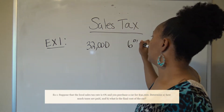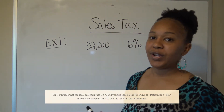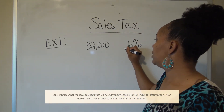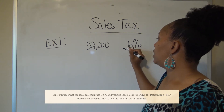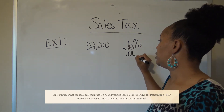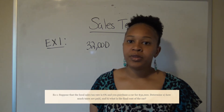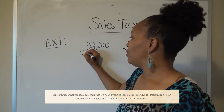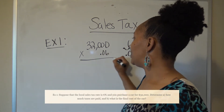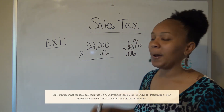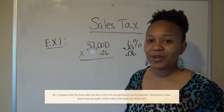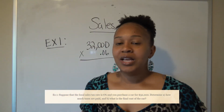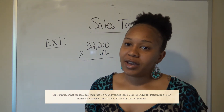Remember, you have to convert any percentage to a decimal. The decimal point is here, and you move it two places to the left — there's one space in there — so 6% converts to 0.06 as a decimal. To find the tax amount, multiply $32,000 by 0.06. You can do this by hand or use a calculator.